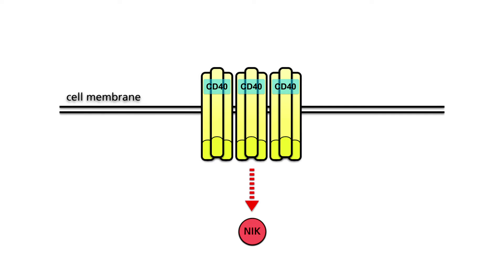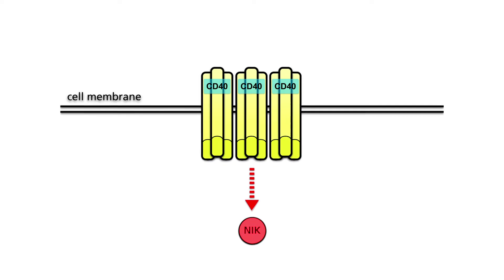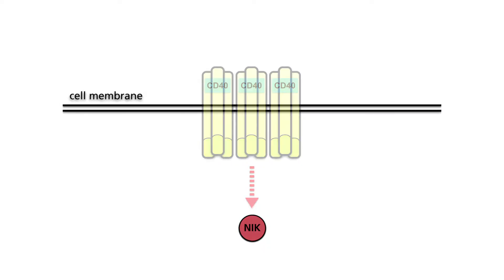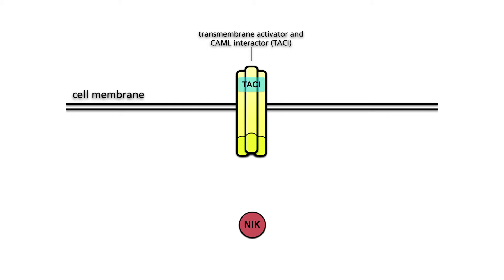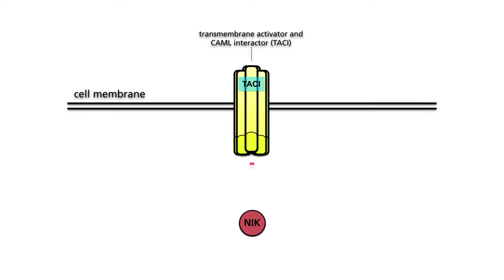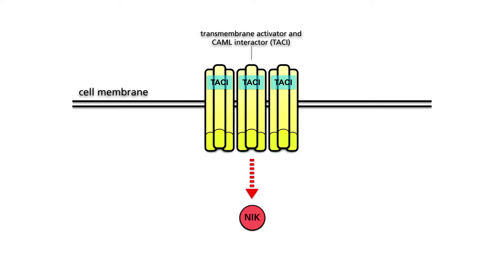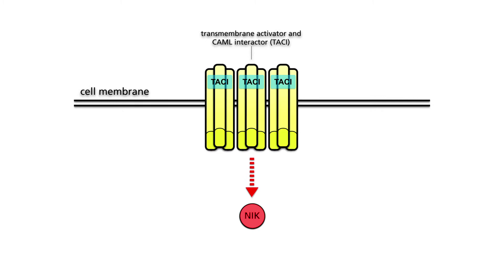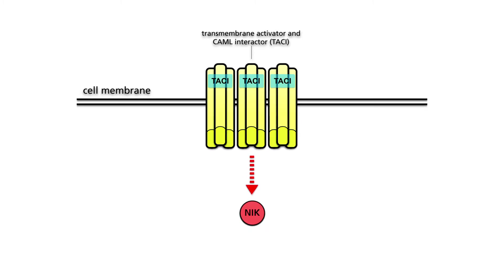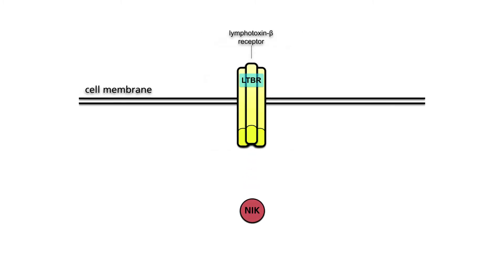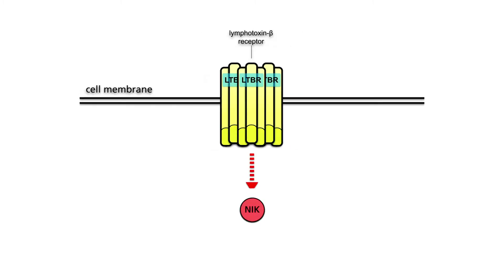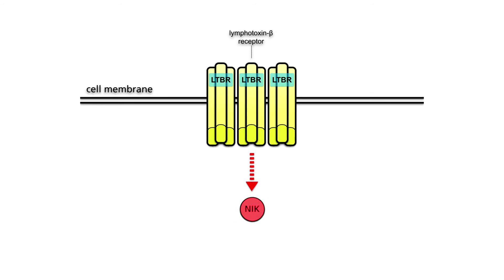One of these genes encodes CD40. Another gene that can be amplified in myeloma encodes the transmembrane activator and CAML-interactor, TACI for short. Furthermore, the gene encoding the lymphotoxin beta receptor can also be amplified.